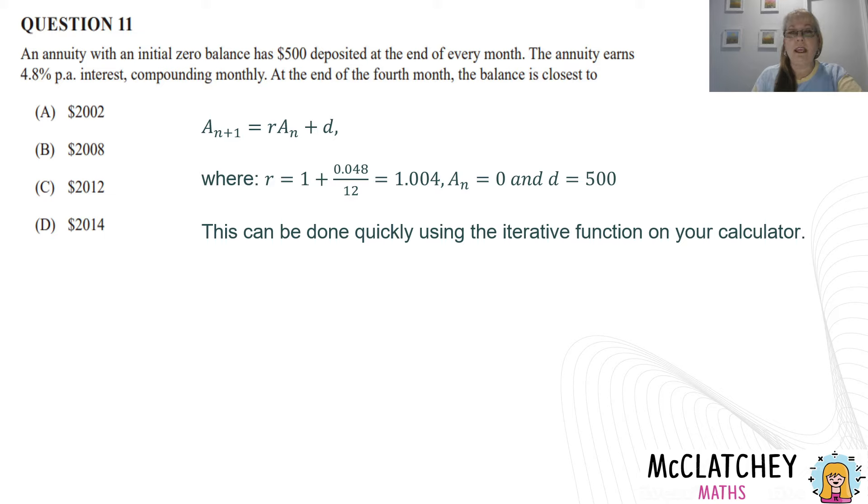So what we could do is we could actually put this into our calculator. So what I could do on the calculator is just start with 0, add 500 and times it by the interest rate. That gets a little bit complicated if you're not really good at using iterative function. We're going to actually do this with repeated use of the recurrence relation, which is all the iterative function really is on the calculator. But we're going to do it on working on paper so you can see where the numbers are coming from.